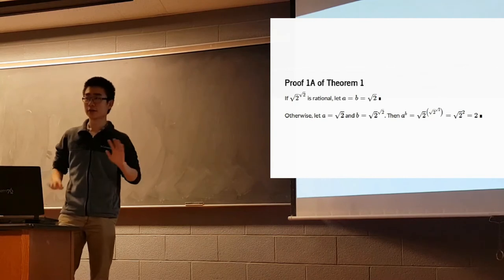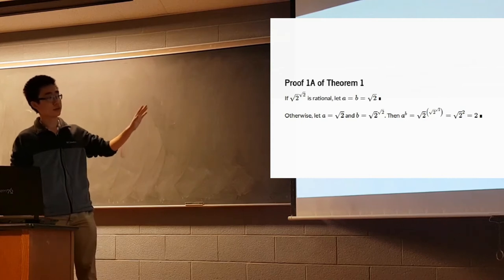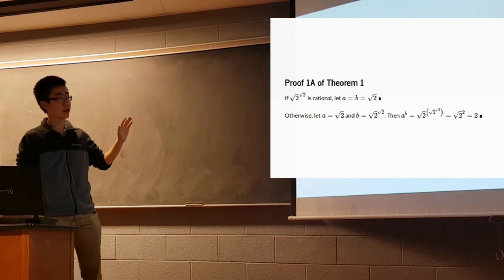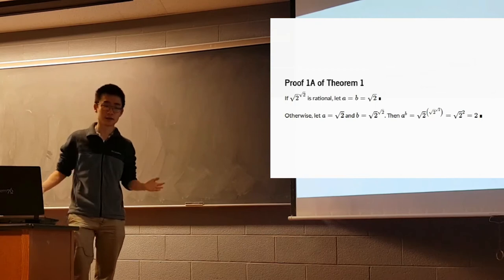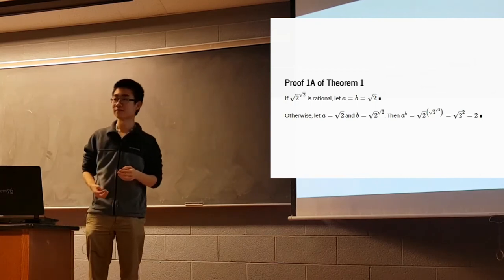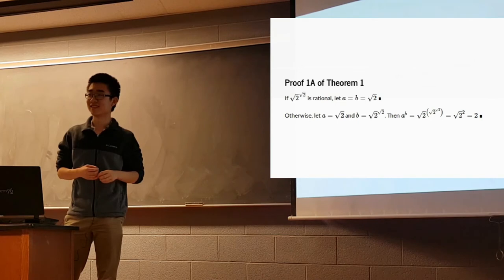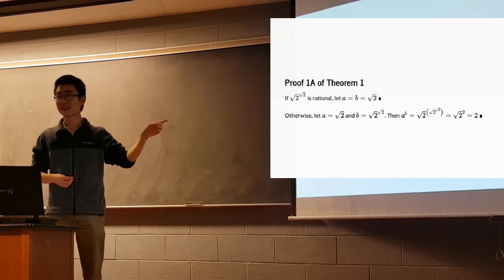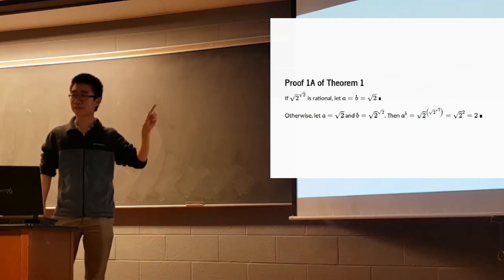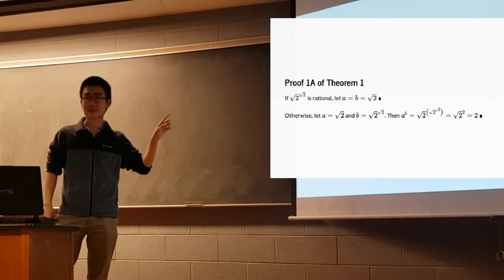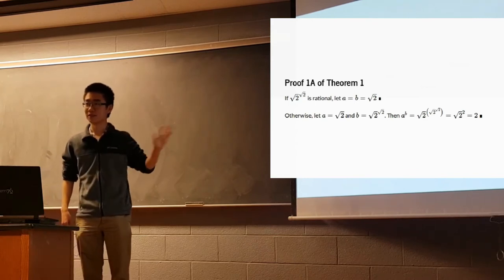So this is an example of a non-constructive proof. Why is it non-constructive? Well, if we tried to turn this into a list of steps to get our a and b, the first step is we need to decide whether √2^(√2) is rational. And who can tell me whether √2^(√2) is rational? There are techniques — the Gelfand-Schneider theorem — that give you that this is actually not a rational number. But did I present to you a list of steps for determining whether √2^(√2) was rational in this proof? No. So you cannot turn this proof into an algorithm.